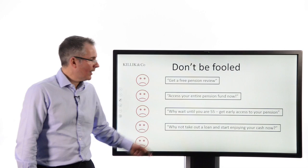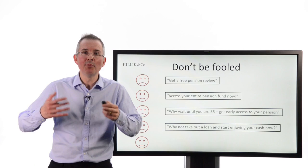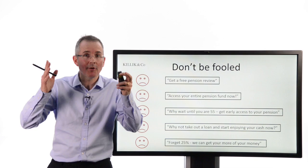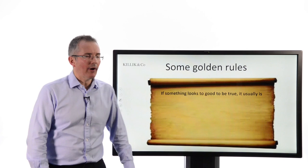One way they might offer that is via a loan. This is stuff not to fall for, by the way. This is kind of, you know, put down the phone, delete the text, forget 25%, we can get more of your money. You get the idea. People essentially implying you can bend the rules. So knowing the rules, getting proper advice, fairly essential.